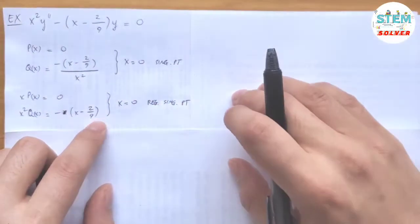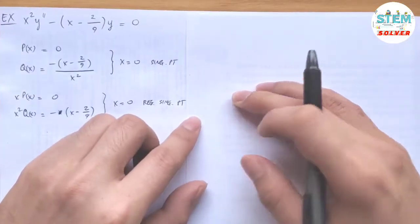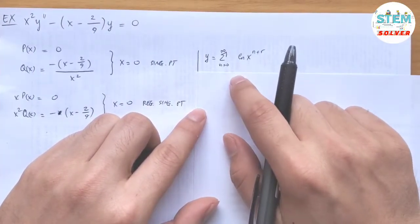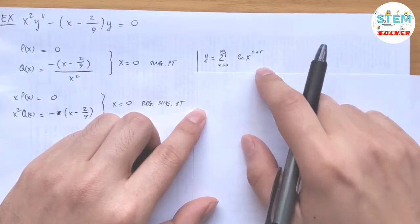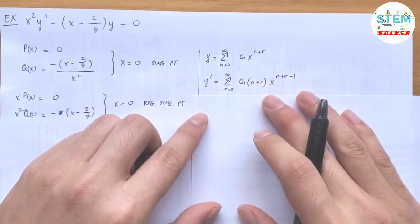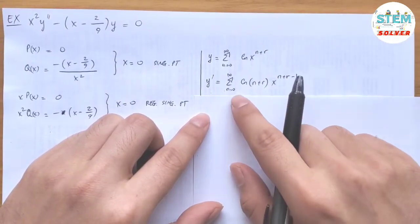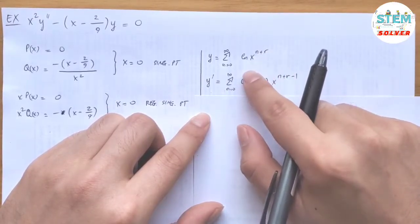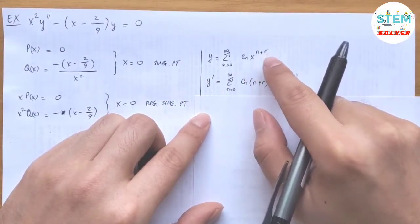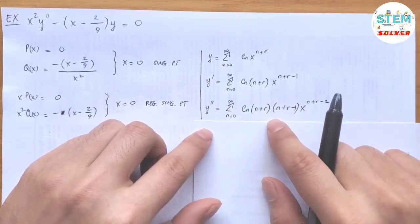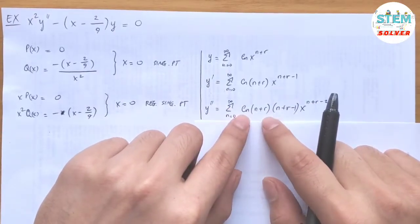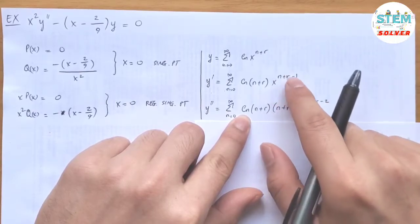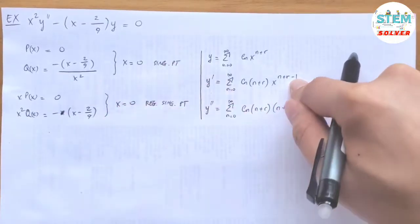Since x equals 0 is a regular singular point, our solution is given in Frobenius form: y equals the power series from 0 to infinity of c_n times x to the n plus r. The first derivative gives the series from 0 to infinity of c_n times (n plus r) times x to the n plus r minus 1 — bring down the exponent and subtract by 1. The second derivative gives c_n times (n plus r)(n plus r minus 1) times x to the n plus r minus 2.